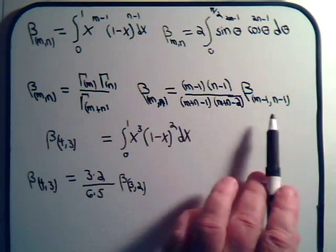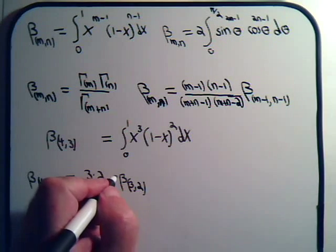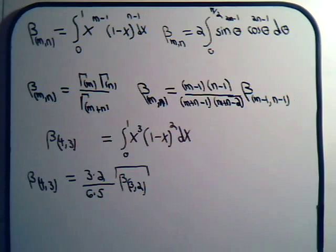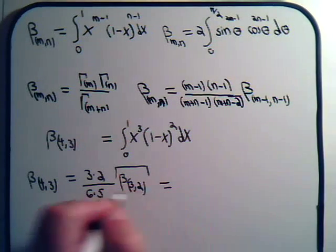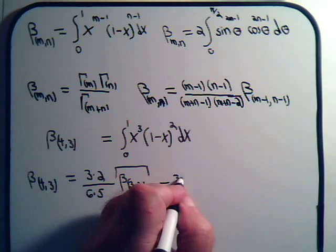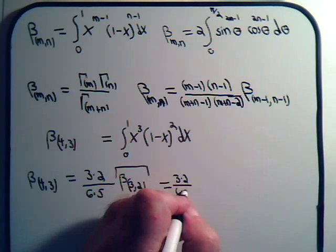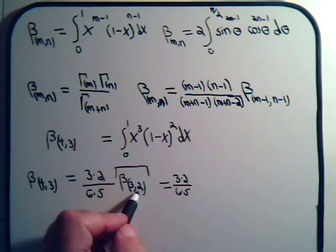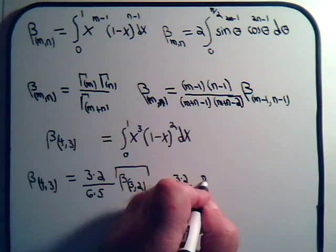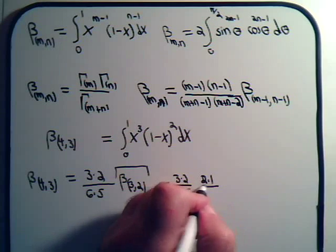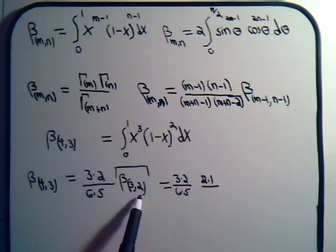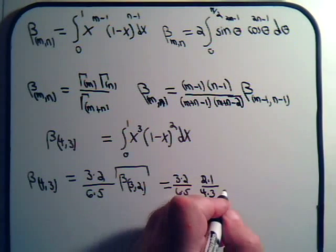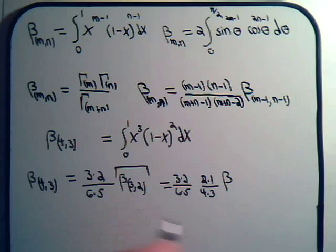Applying this is a lot easier than it looks. For the beta function of 3, 2, let's apply the reduction formula again. We have (3 minus 1) times (2 minus 1), that's 2 times 1, divided by (3 plus 2 minus 1)(3 plus 2 minus 2), which is 4 times 3, times the beta function of 2, 1.